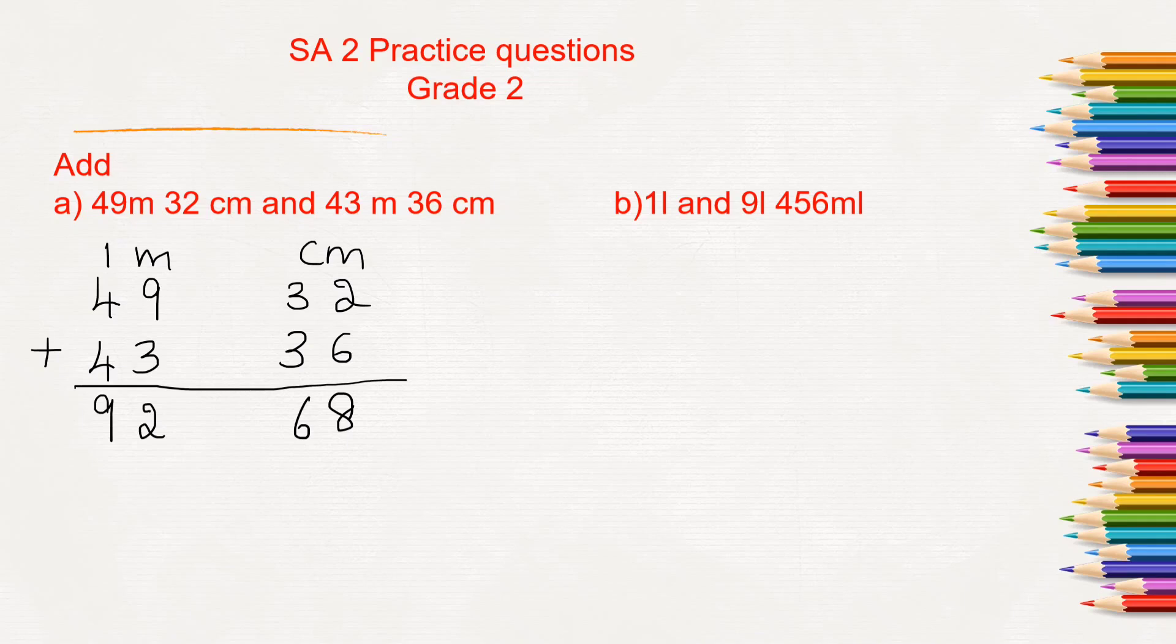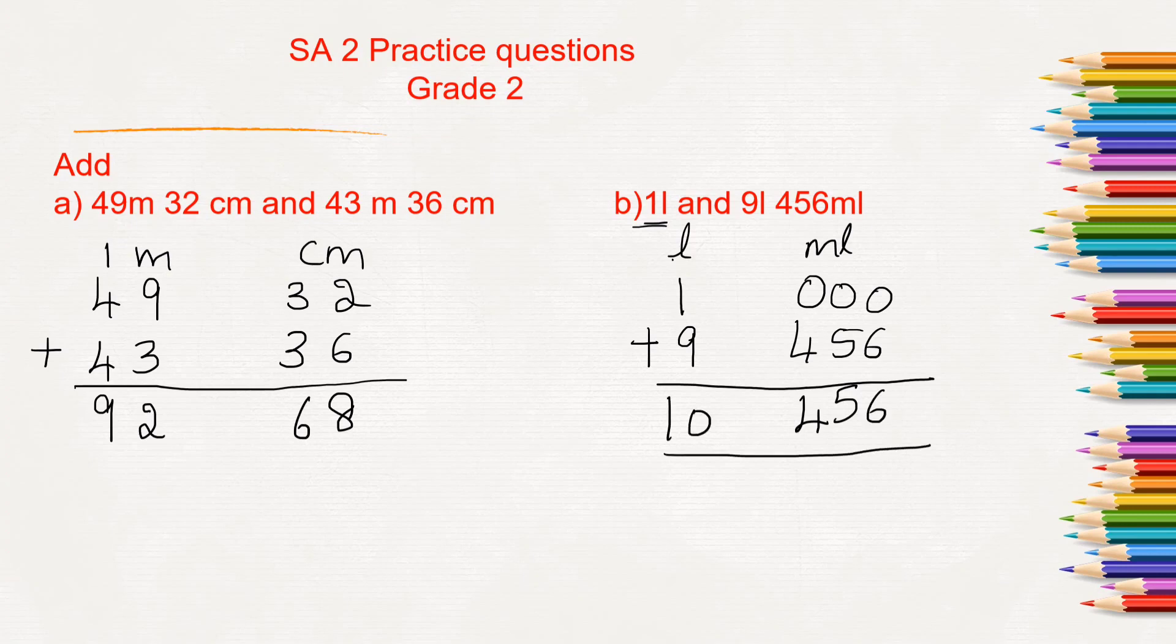Here is one more question: 1 liter and 9 liter 456 milliliter needs to be added. So liter and milliliter. The first number, only liter is mentioned, 1 liter. There is nothing in milliliter place, so we can leave it empty or we can also write 3 zeros in the place of ml. Similarly, it needs to be added with 9 liter and 456 milliliter. Let's add 456 as it is. 9 plus 1 is 10. So 10 liters and 456 milliliters.